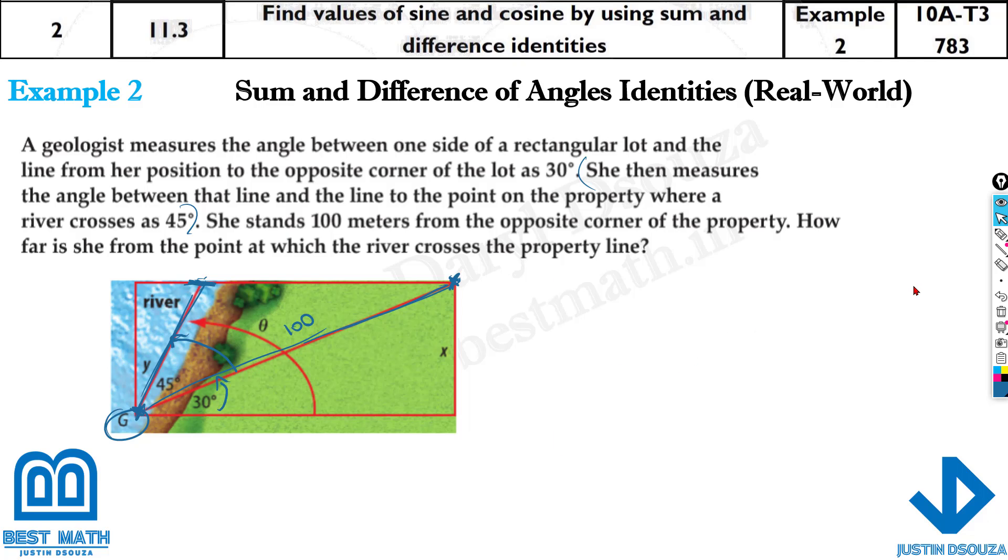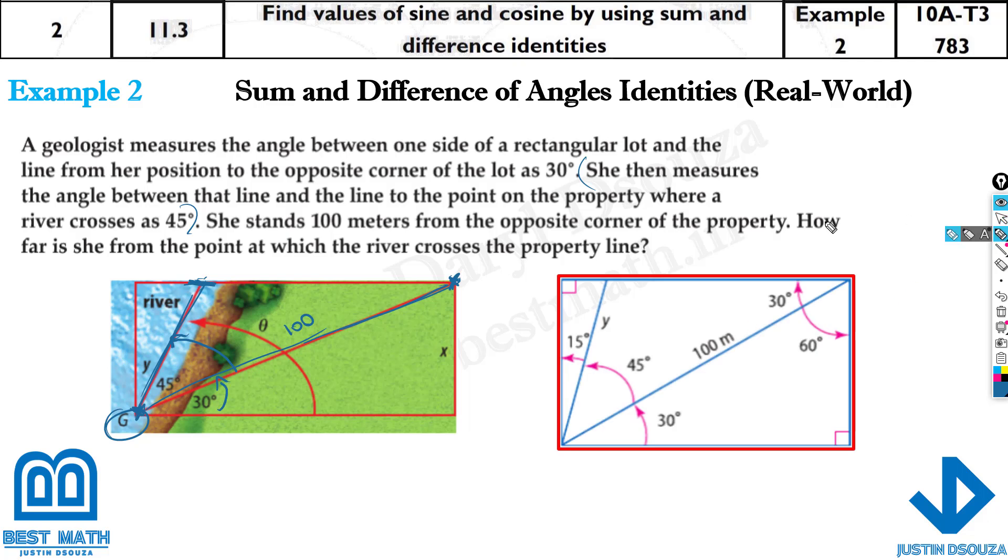I think there is a figure already. Yeah, this one. I'll just refer to this. It's just the same one, but a bit cleaner one. This is the place where the geologist is there. And this y is what we want. This is 30 degrees. This is 45 degrees. So what is the opposite side? Opposite angle.